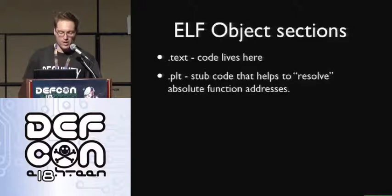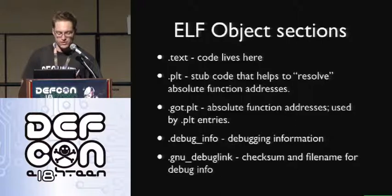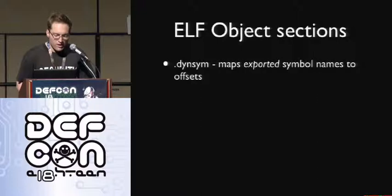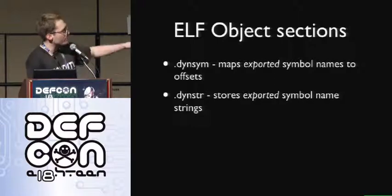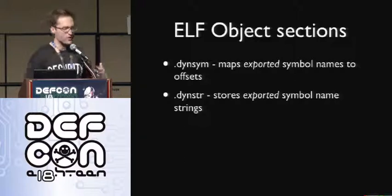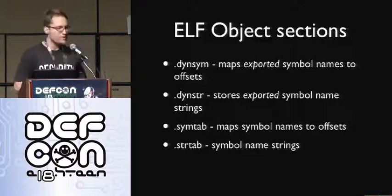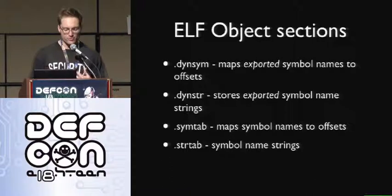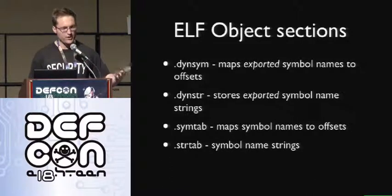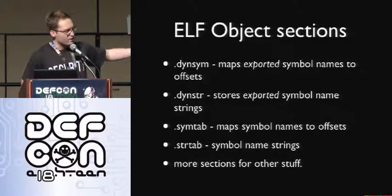A couple of key sections to know about: the text section is where code lives. The PLT section has stub code that helps resolve absolute function addresses. The GOT.PLT is where absolute function addresses are stored, used by the PLT entries. There are also debugging sections like .debug_info and .gnu_debuglink. The DYNSYM and DYNSTR sections are used for dynamic linking — DYNSYM creates a mapping between exported symbol names and offsets, and DYNSTR stores the actual symbol names. In addition, SYMTAB and STRTAB are supersets of that information, including local variables and other non-exported symbols, useful for debugging and backtraces.